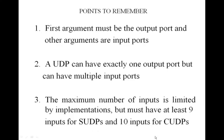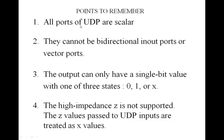All ports of UDPs — both input and output — are scalar type. No vector types are allowed. They cannot be bidirectional 'inout' ports either. The output can have only a single-bit value with one of three states: 0, 1, or x. High impedance z is not supported. If a z value is passed to a UDP input, it will be treated as x.